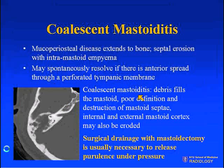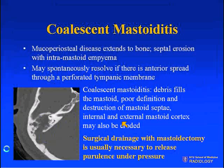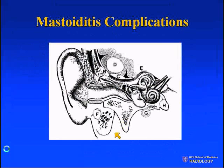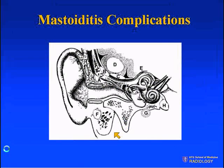When we say coalescent mastoiditis, we're going to see debris filling the mastoid, poor definition, and destruction of the mastoid septa, with destruction of the internal and external mastoid cortex. These patients typically will require mastoidectomy for drainage of the pus.